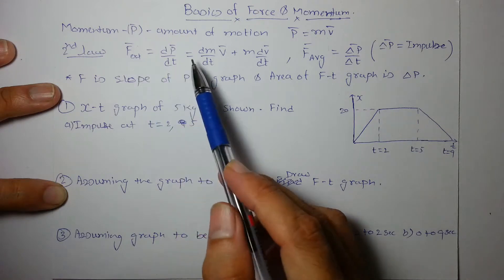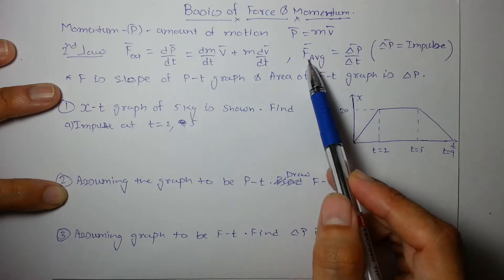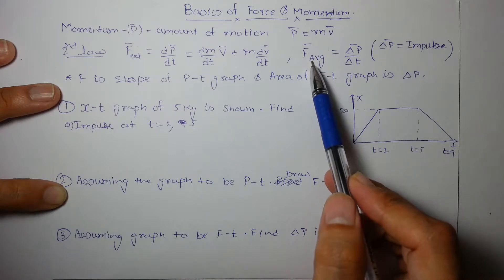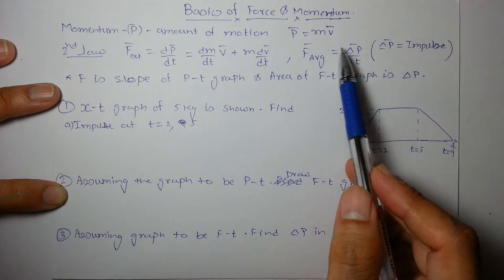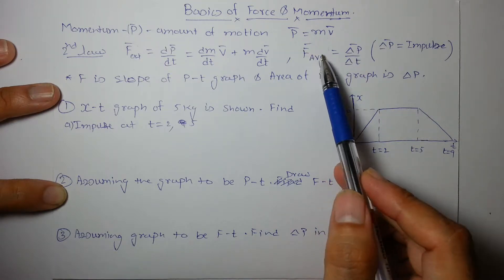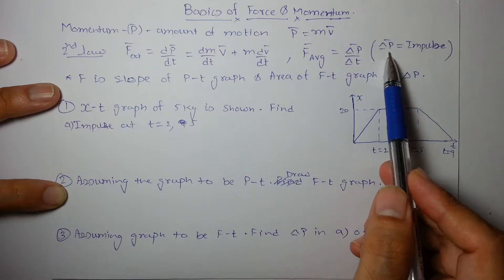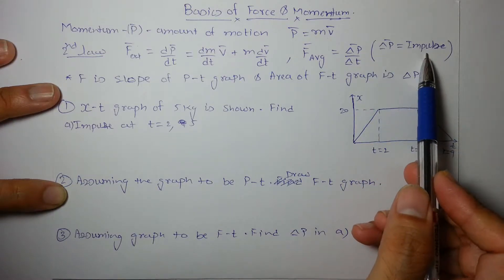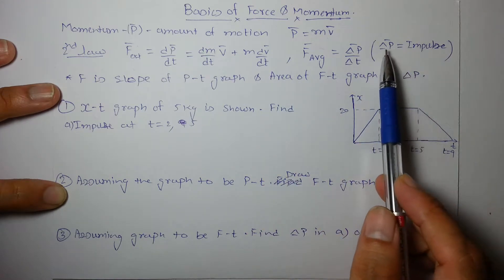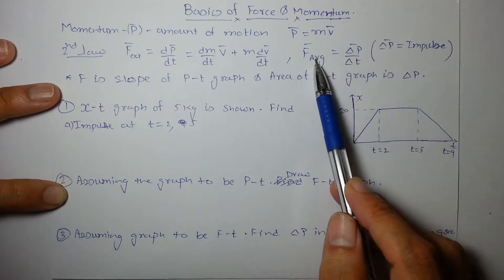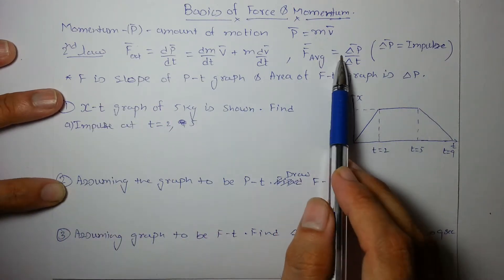So F_external equals mass times acceleration. Similarly, the average force is the change in momentum over time. The direction of average force is the direction of change in momentum. Change in momentum is also called impulse — these are definitions of impulse, momentum, and average force.